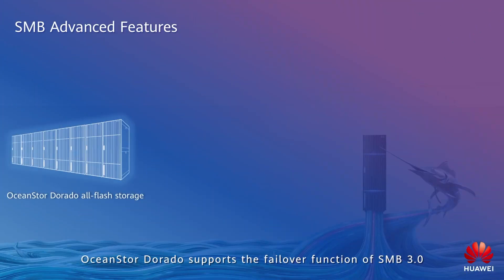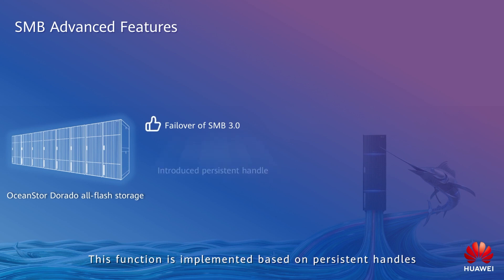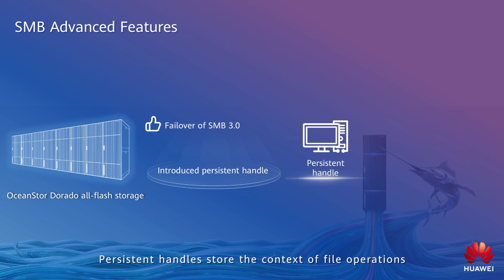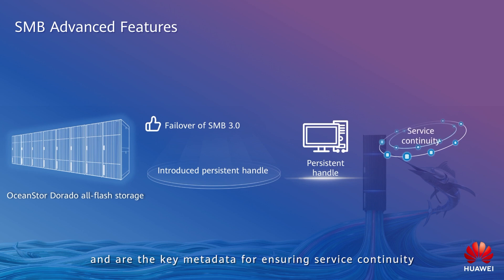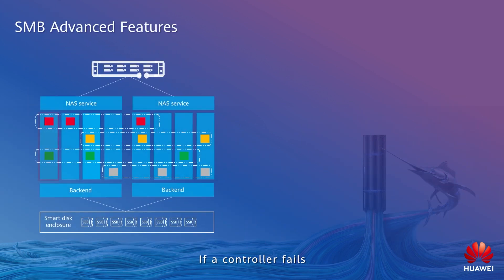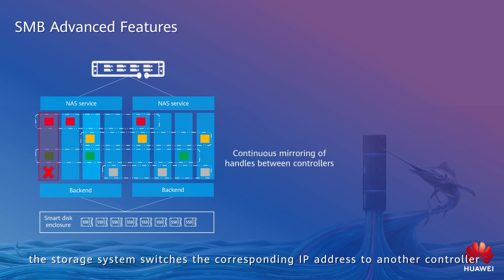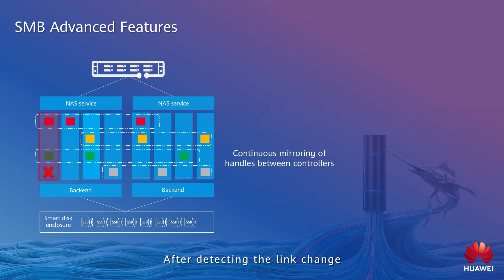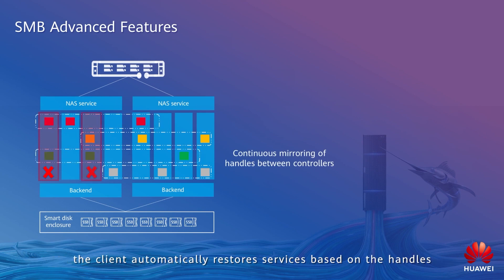OceanStore Dorado supports the failover function of SMB 3.0. This function is implemented based on persistent handles. Persistent handles store the context of file operations and are the key metadata for ensuring service continuity. The storage system synchronizes the handles among multiple controllers and ensures that the handles are not lost. If a controller fails, the storage system switches the corresponding IP address to another controller. After detecting the link change, the client automatically restores services based on the handles.